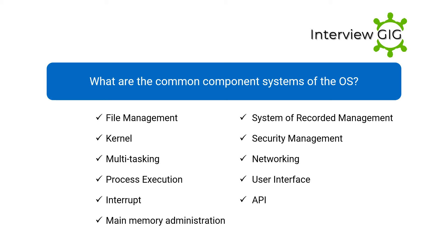What are the common components of an OS? They include: file management, kernel, multi-tasking, process execution, interrupt handling, main memory administration, storage management, security management, networking, user interface, and API.